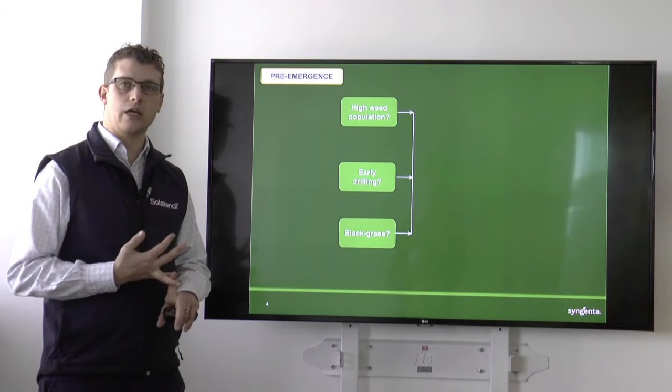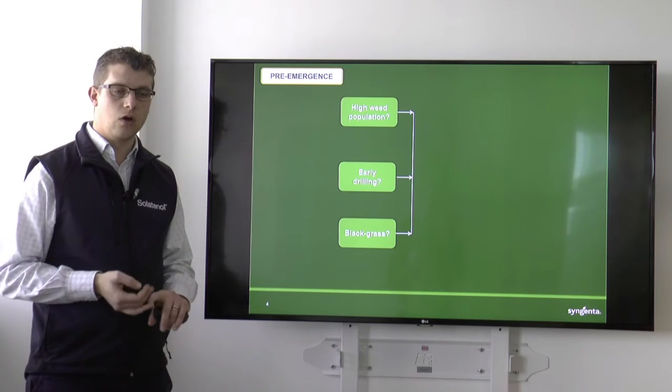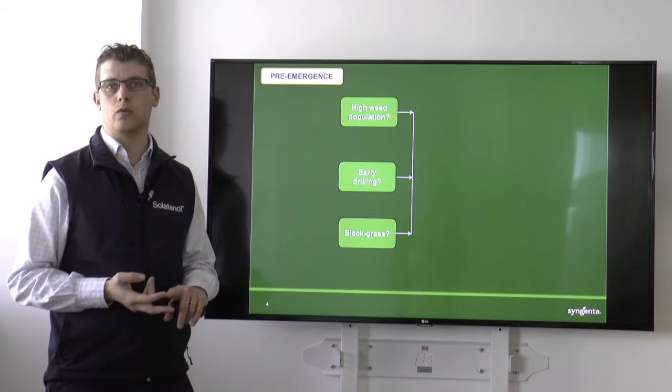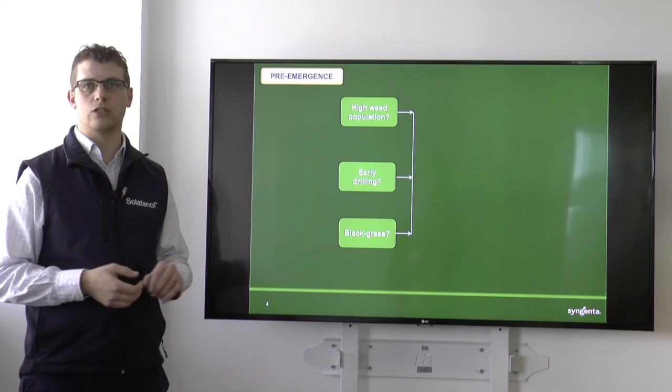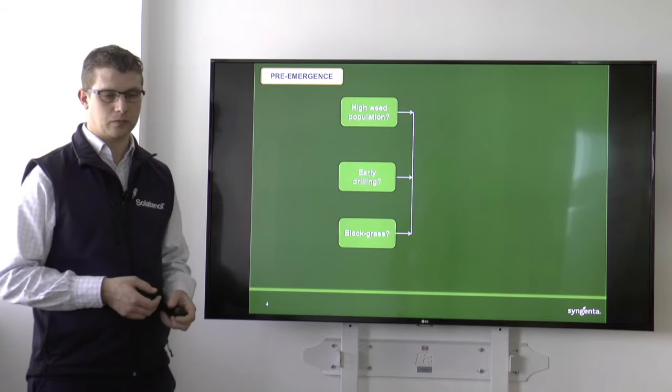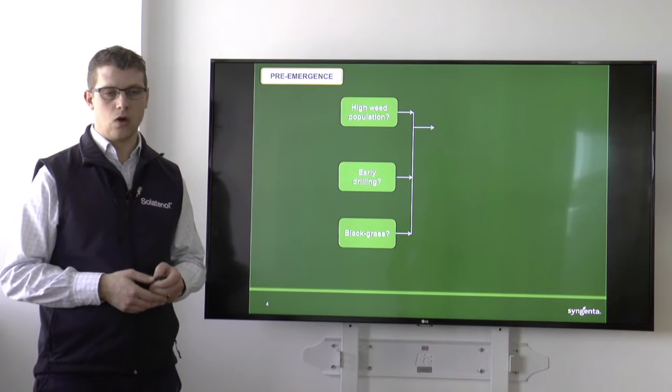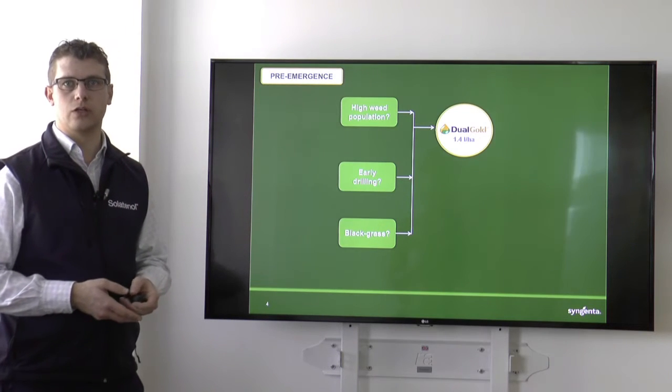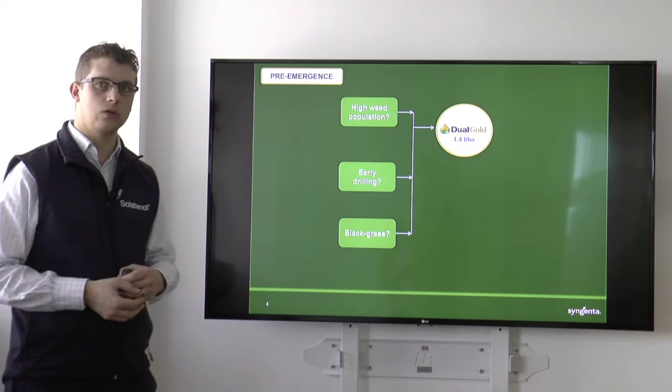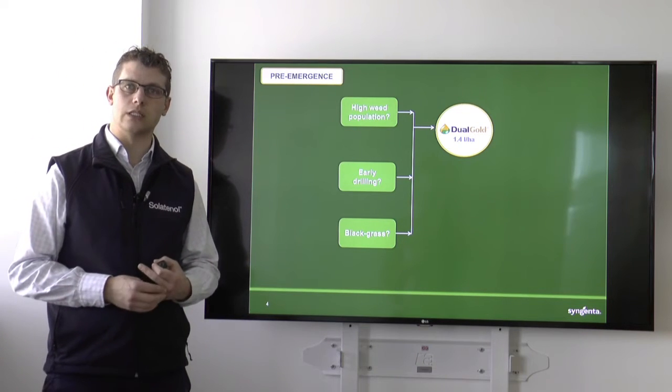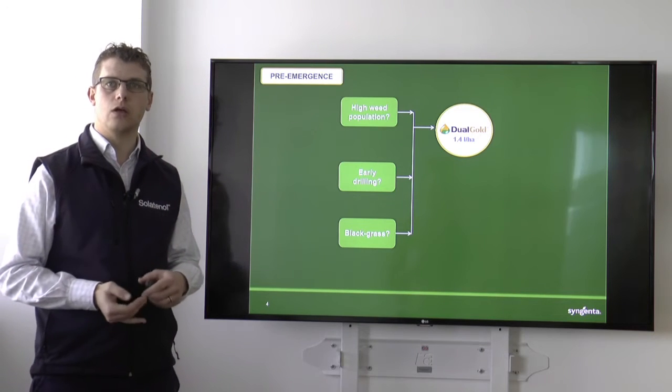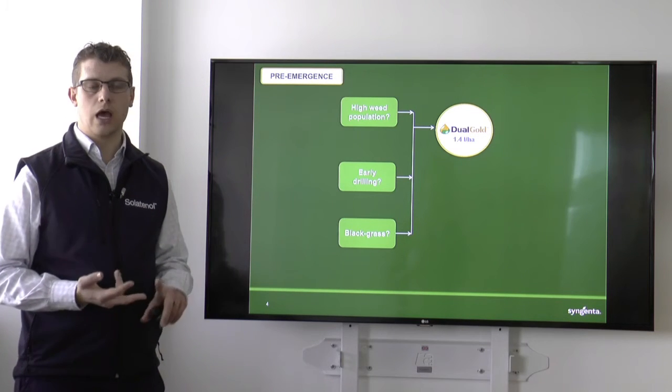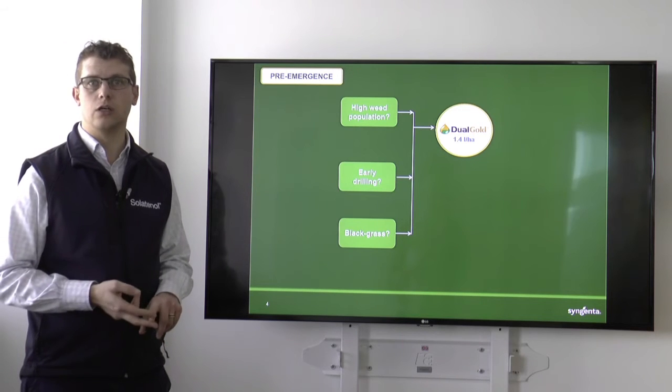If your site is an early drilling site perhaps, or if you know you're going to have a high weed population, which you might have in a continuous maize situation. So from our stable, we would suggest an application of Dual Gold at up to 1.4 litres a hectare. And that is going to be useful against your ryegrass, barnyardgrass, and it's an alternative mode of action for your blackgrass.